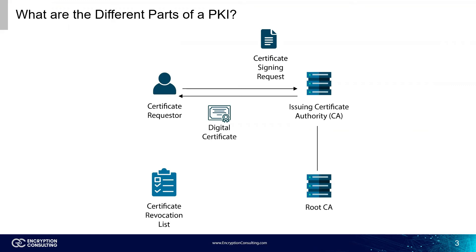One other part of the PKI is the CRL, or certificate revocation list. This list contains all the information for any revoked certificate. All CAs write to this list at certain time intervals. This way, they know what certificates can still be used and what certificates must be cut out of their chain of trust.